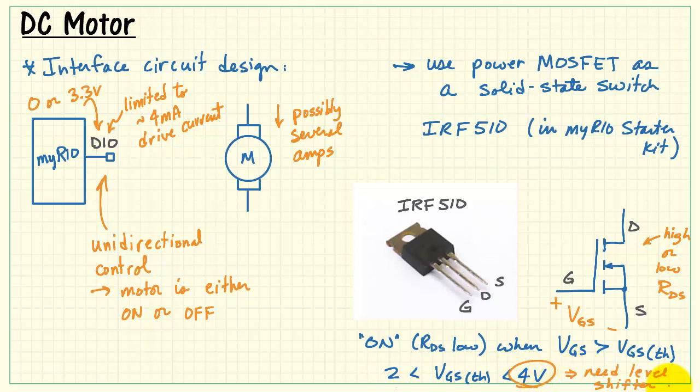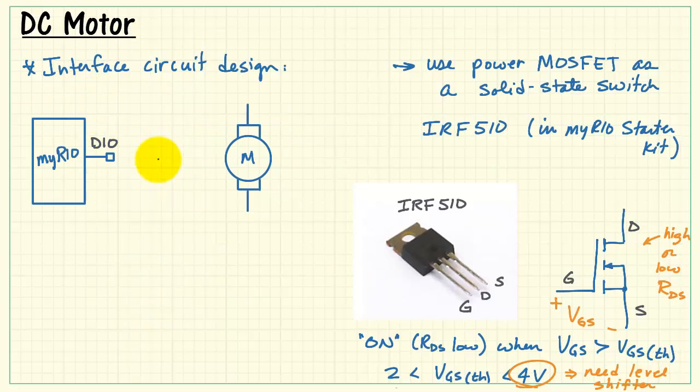The transistor is on when VGS exceeds the threshold voltage, which can range anywhere from 2 to 4 volts. The 4-volt possibility means that we need a level shifter, because the MyRio is only producing a maximum of 3.3 volts. For some devices, it might not be sufficient to even turn it on.